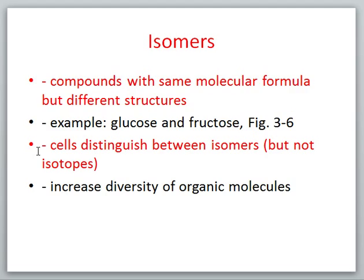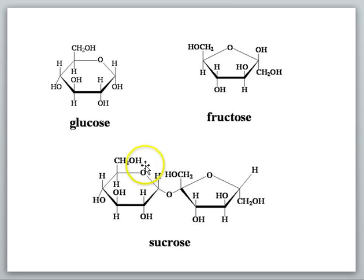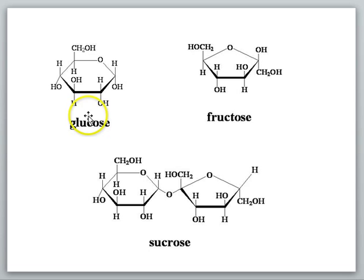Glucose and fructose are examples of isomers. Both glucose and fructose have the molecular formula C6H12O6, but you can see in these diagrams that they have a different shape — a different placement of those carbons, hydrogens, and oxygens. So these molecules are going to have different characteristics and they're going to function differently biologically. Isomers are two compounds that have the same molecular formula but different structures, and cells do distinguish between isomers.